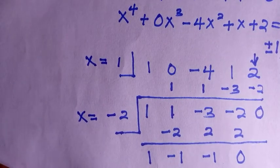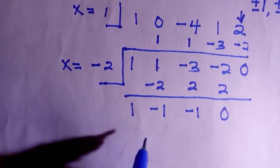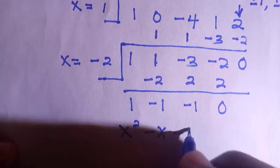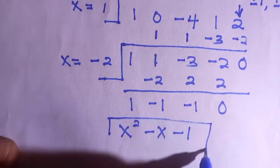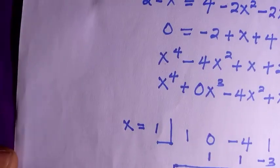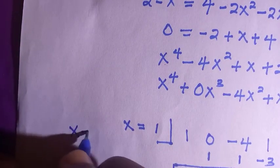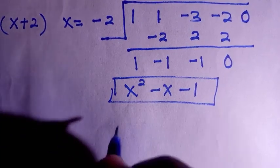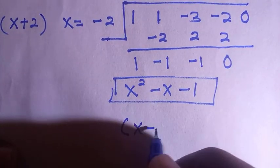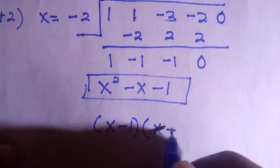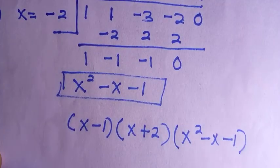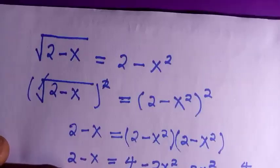We now have x equals 1 and x equals negative 2 as roots. From the synthetic division, the remaining quotient is x squared minus x minus 1. So for the quartic, factoring gives us (x minus 1)(x plus 2)(x squared minus x minus 1). The quadratic x squared minus x minus 1 is not factorable, so we leave it as is.